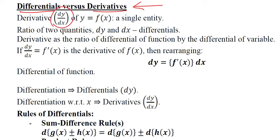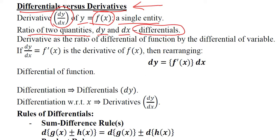The derivative is represented as dy over dx. We already know this — it is the derivative of y which is based upon the x variable, and it's a single entity. It is the ratio of two quantities, dy over dx, and these are two differentials. A derivative is basically composed of two differentials as a ratio of the two.